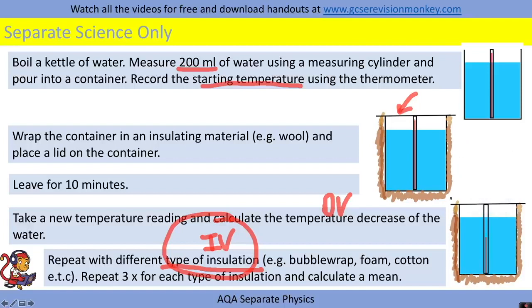You might investigate the thickness of the insulation and how that affects the temperature change. Start with a thinner piece, do your readings, then repeat the experiment with a thicker piece of wool, calculate the temperature decrease, and change the thickness again.